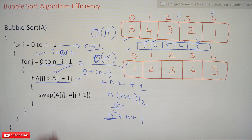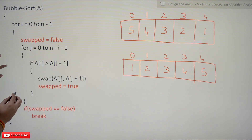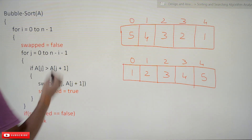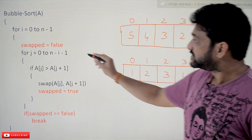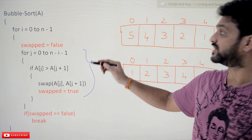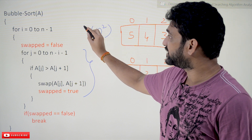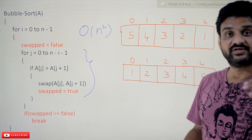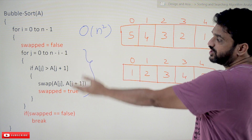Now for the optimized bubble sort algorithm: in the worst case the same thing repeats — it is the same as the original algorithm. In the worst case, it is going to iterate O(n²) times, doing all the comparisons.